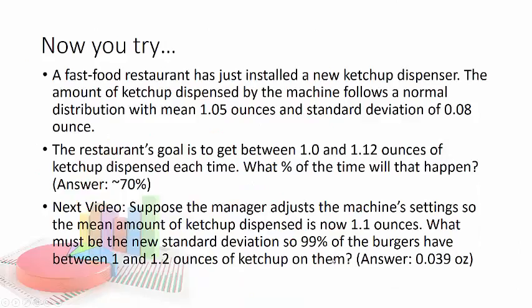So now what I'd like you to try is we have a fast food restaurant that has just installed a new ketchup dispenser. The amount of ketchup dispensed by the machine follows a normal distribution with a mean of 1.05 ounces, and a standard deviation of 0.08 of an ounce. The restaurant's goal is to get between 1.0 and 1.12 ounces of ketchup dispensed each time. What percent of the time will that happen? Well, if you go ahead and calculate your z-scores and use the table, and I'd recommend using both, try it with the table and try it with the calculator, and your answer should be about 70%.